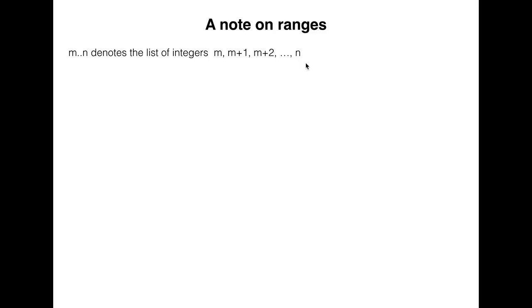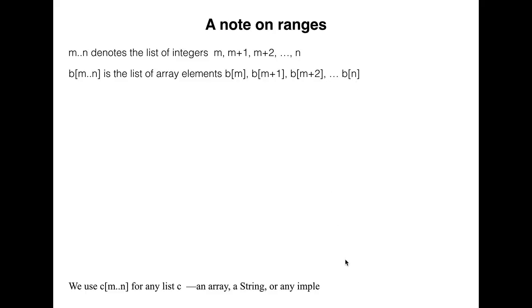We use this notation in describing a segment of an array. b[m..n] denotes the list of array elements b[m], b[m+1], and so on up to b[n]. We can use the same abbreviation c[m..n] for any kind of list or sequence, to represent the part of that list that starts at c[m] and ends at c[n].